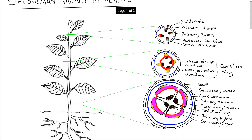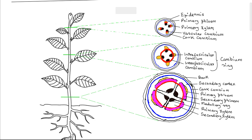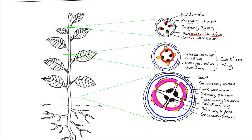There are two types of cambium tissues based on their location. There is the vascular cambium, located within the vascular tissue between the primary xylem and the primary phloem, and the cork cambium, located beneath the epidermis.